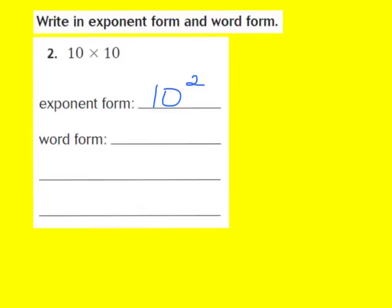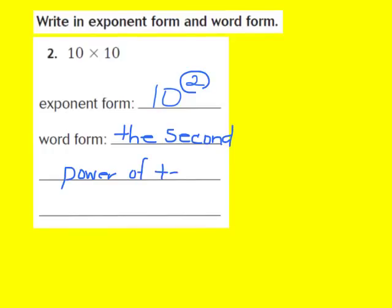Now I also have to write this in word form. In word form, I'm going to start out by saying "the." I look back at my exponent, and my exponent is a 2. So I'm going to write down "the second," because my exponent is a 2, and it's going to be "the second power of 10." So we now have our number written in both exponent form and word form, which is the second power of 10.